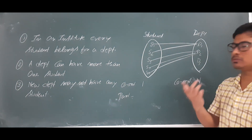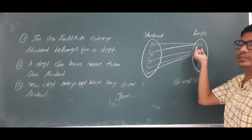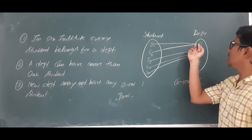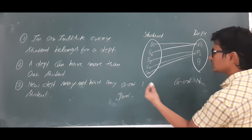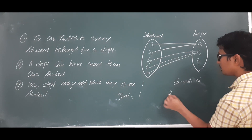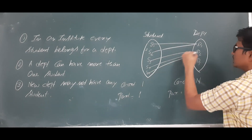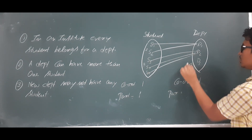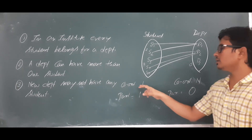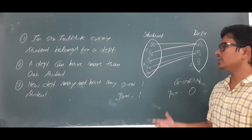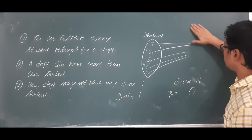Cardinality gives the maximum, whereas participation gives the minimum. Student one has a minimum relationship with at least one department — students S1, S3, and S5 each relate to exactly one department, so the minimum is one for the student. For the department, department one relates to two students but department three relates to zero, so the minimum value for the department is zero.